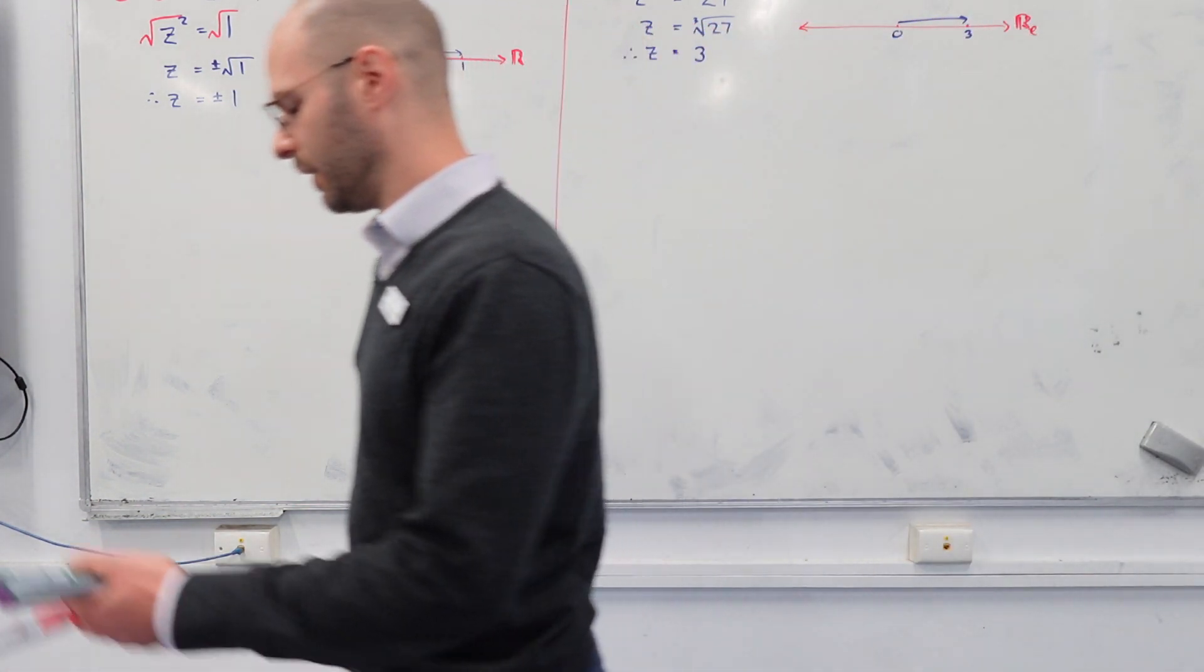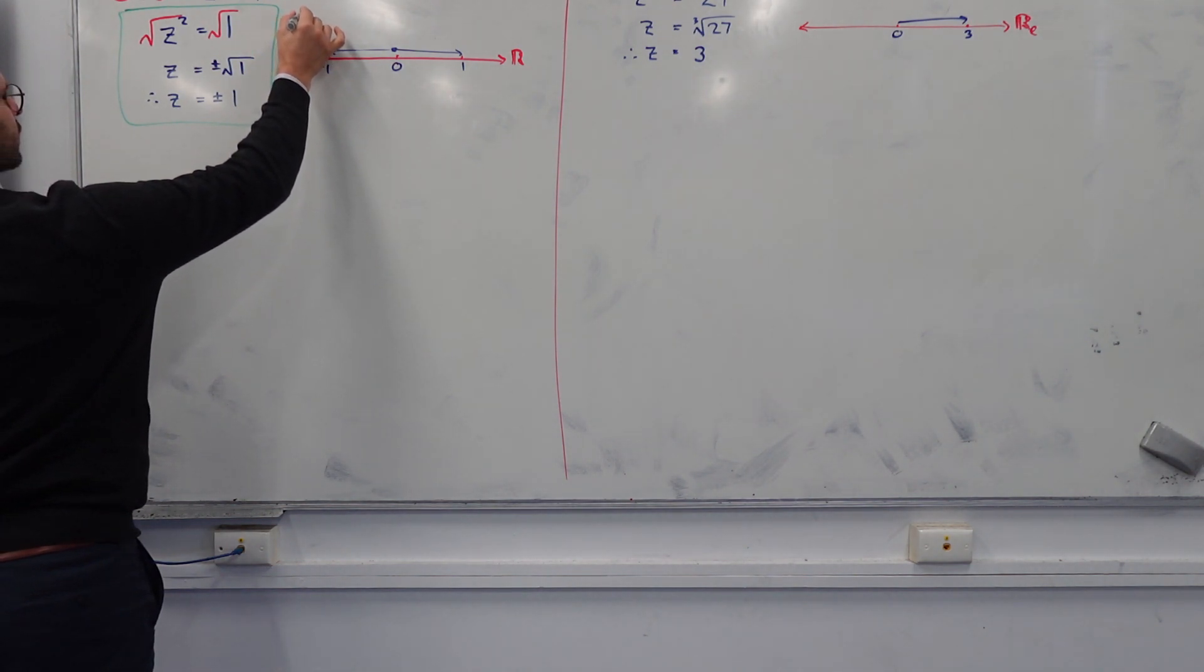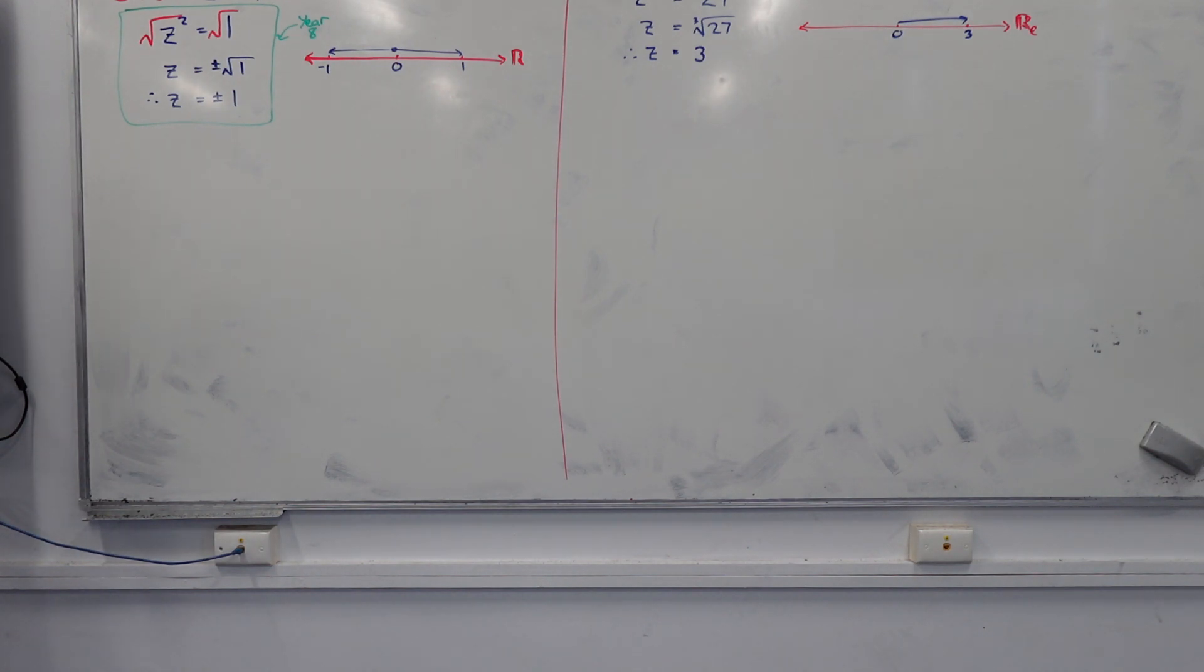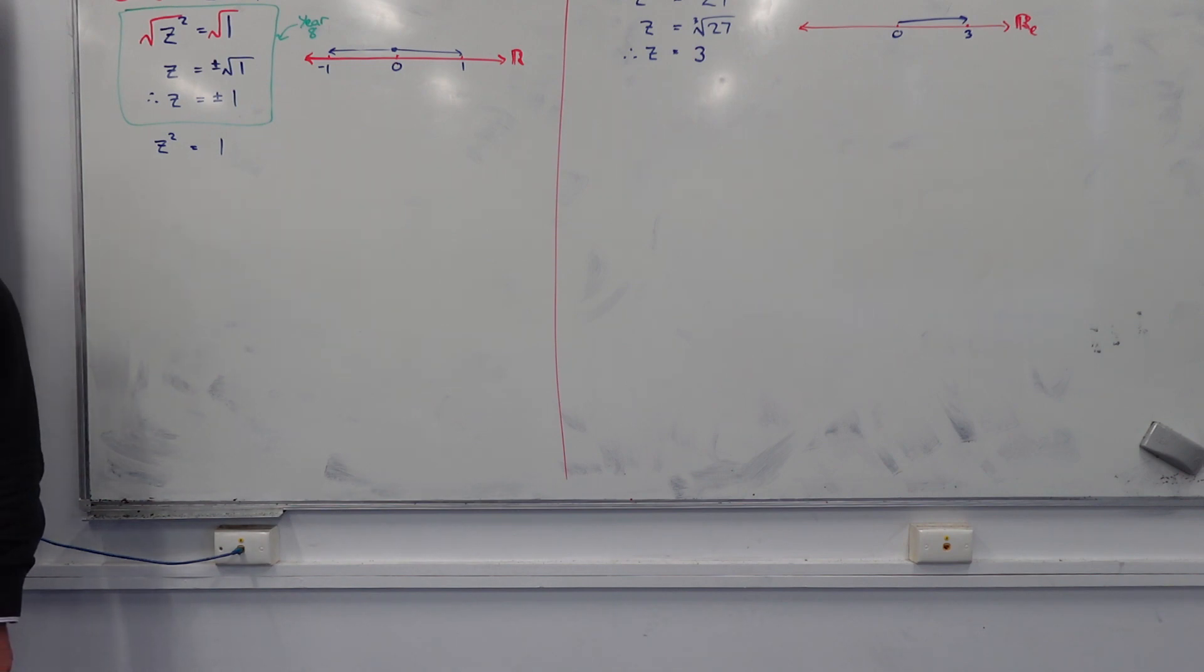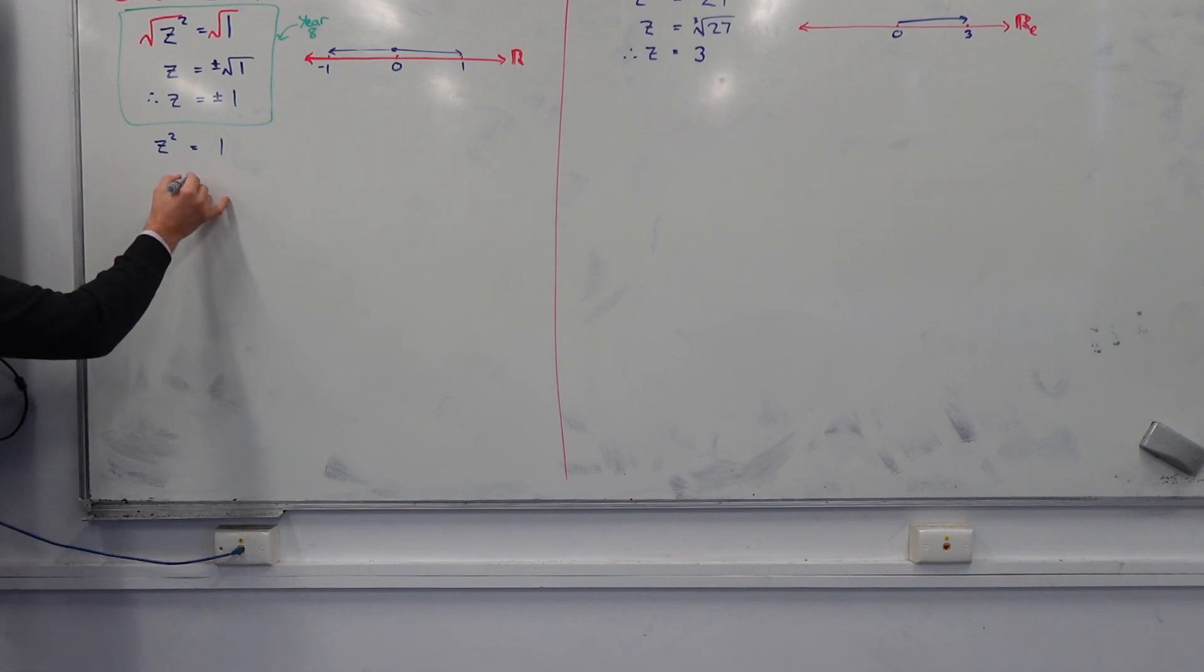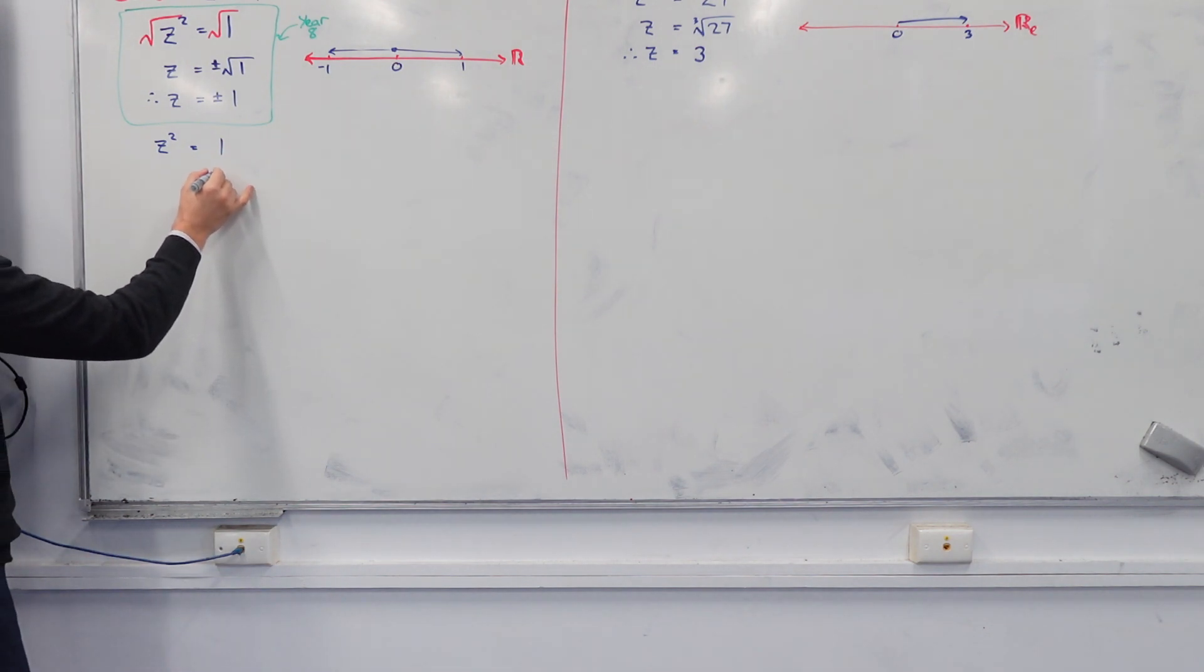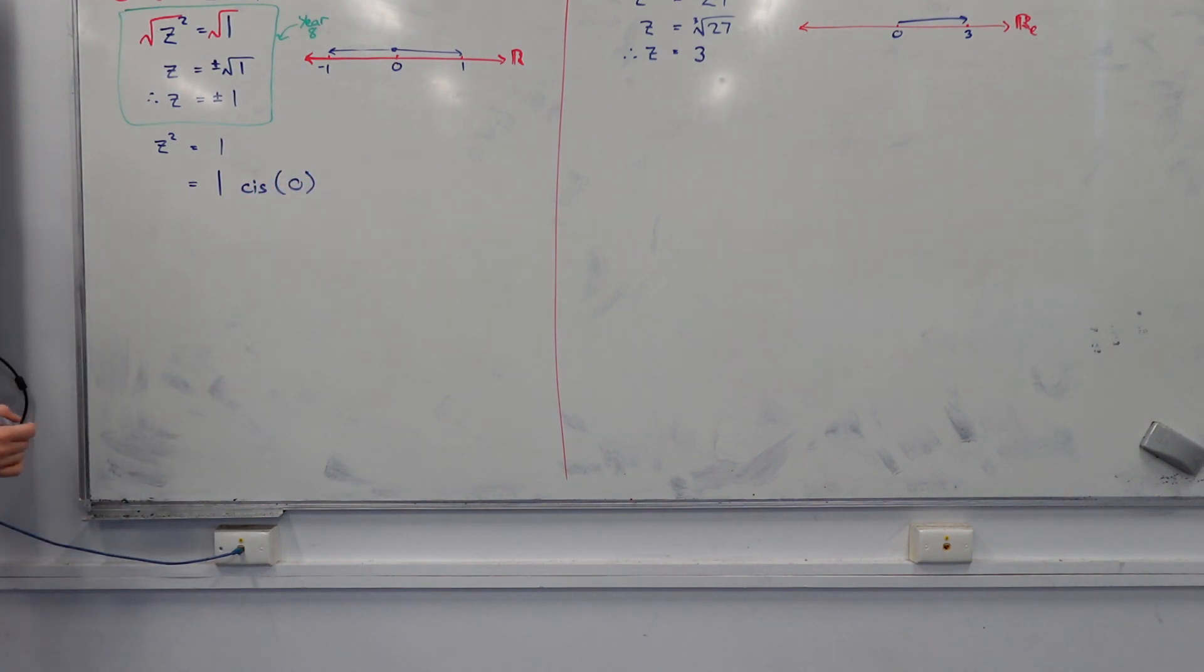By example, first over here and then over here. This is good for a year 8 level. But we're going to do the spec method. Let's start again. Let's go z squared equals 1. Now, rather than solving from here, what we're going to do is a transformation. Rather than working in Cartesian form or rectangular form, let's work in polar form.